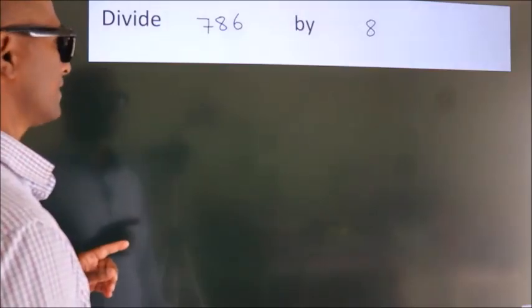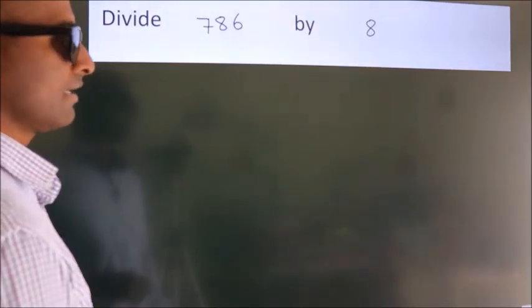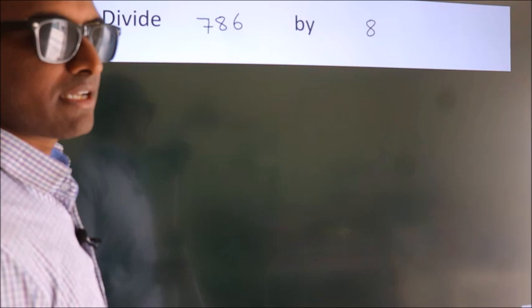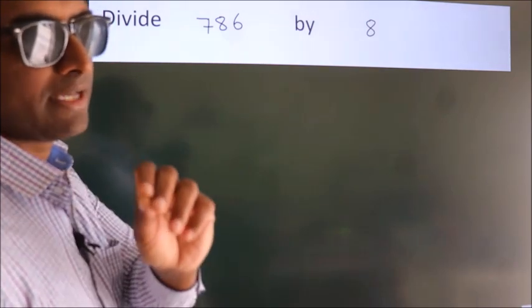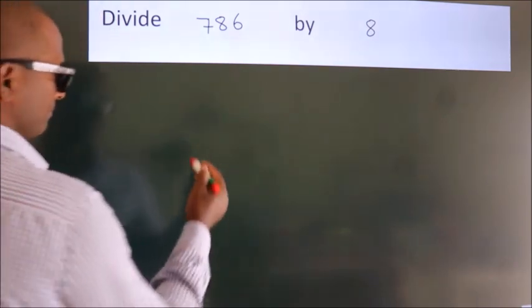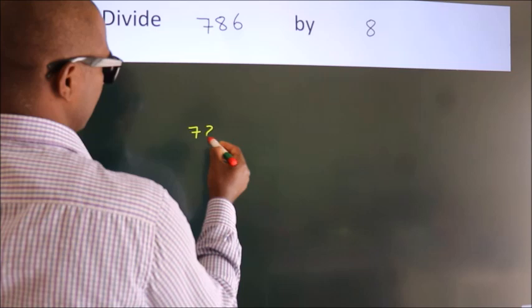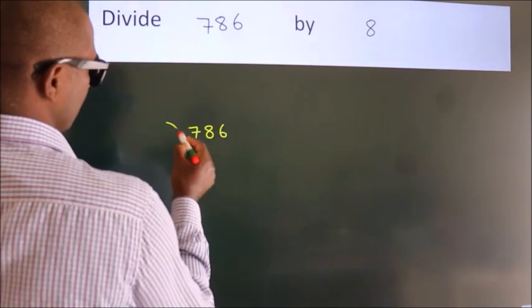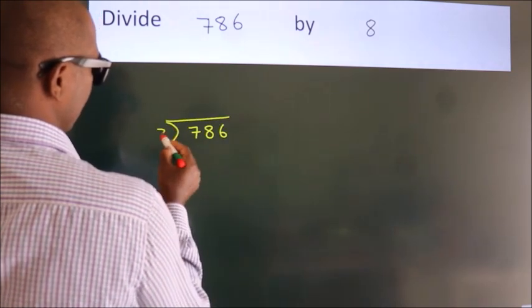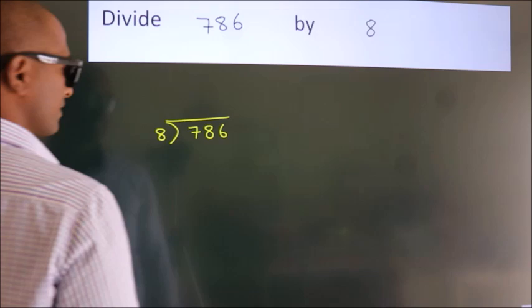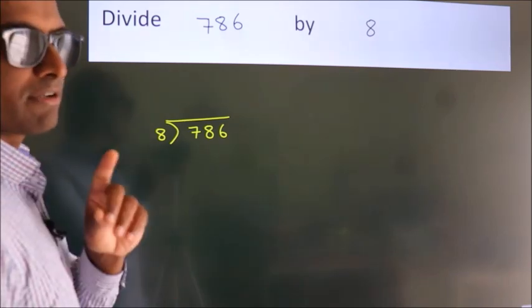Divide 786 by 8. To do this division, we should frame it in this way: 786 here, 8 here. This is your step 1.